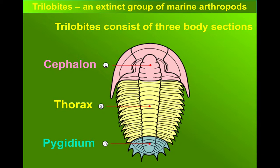The Pygidium, the rear end of the trilobite, was a solid fused section of its shell.